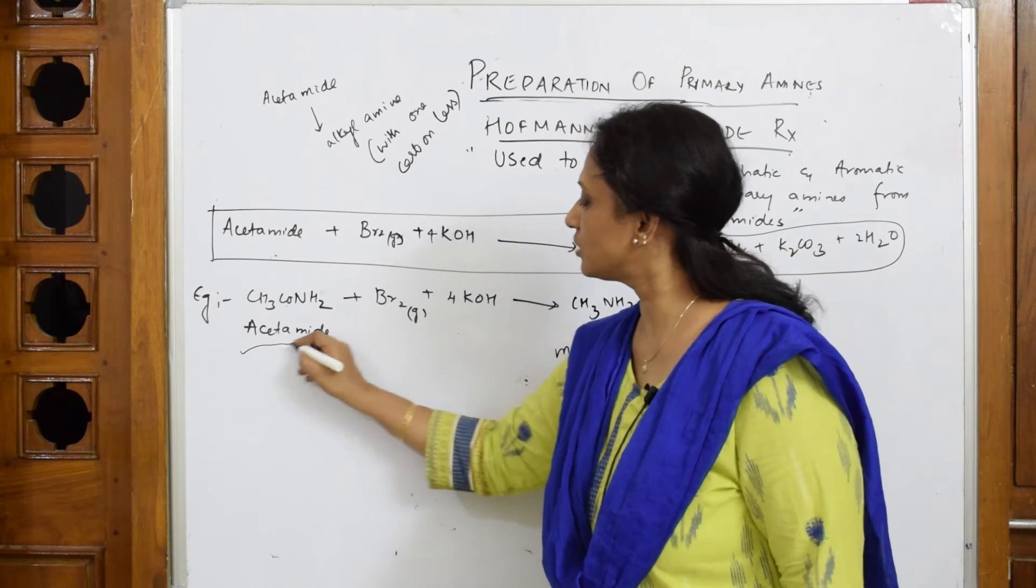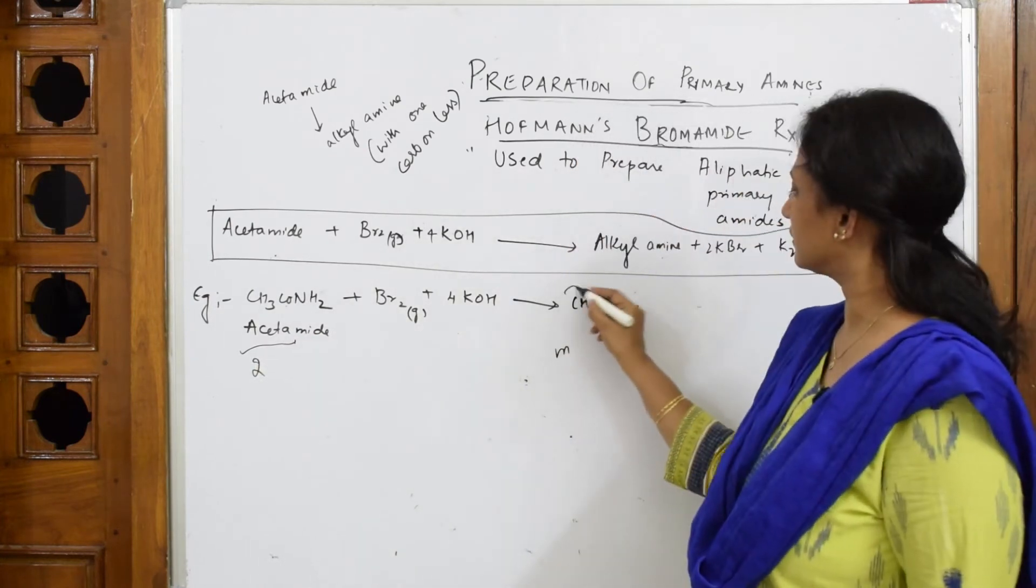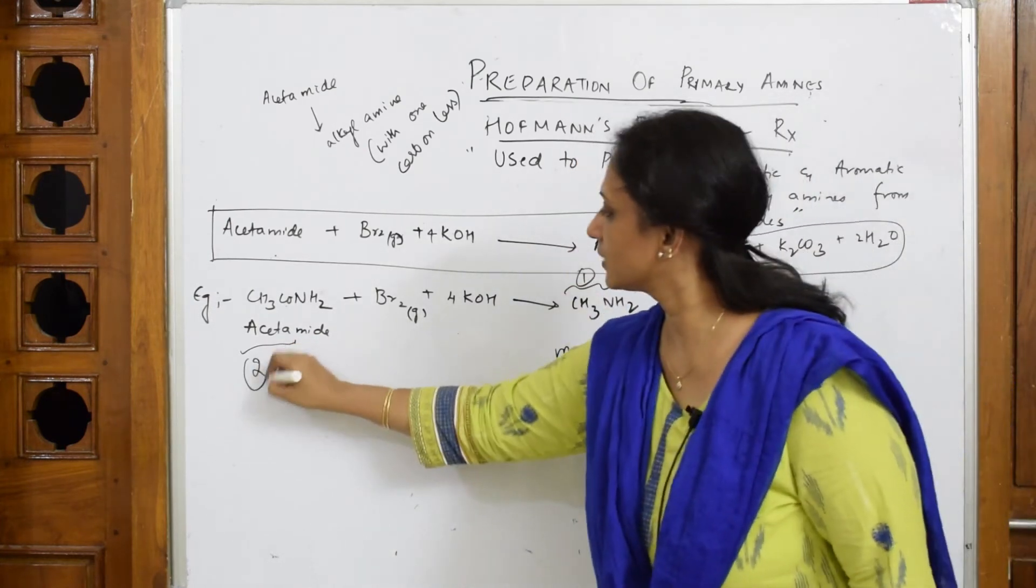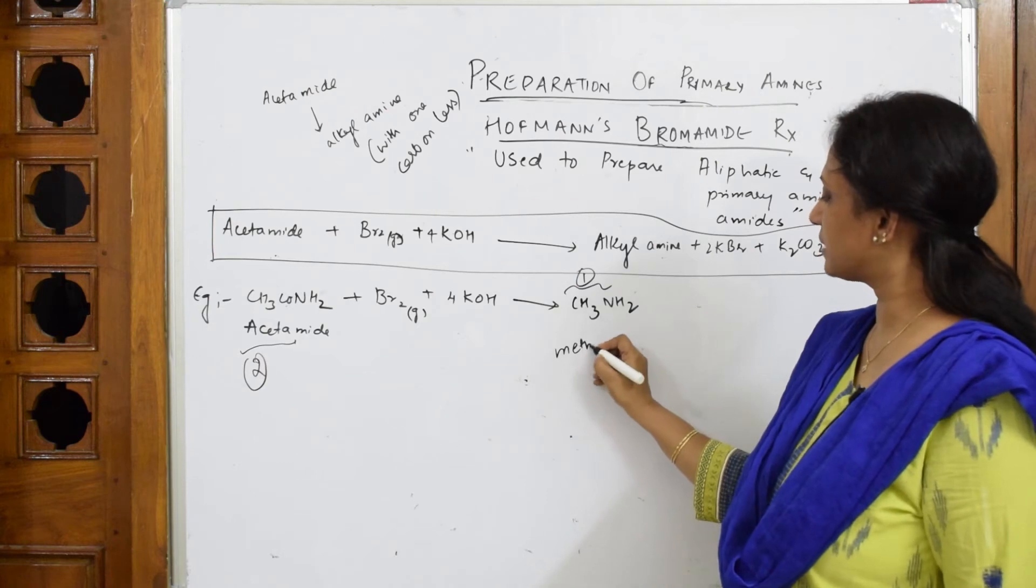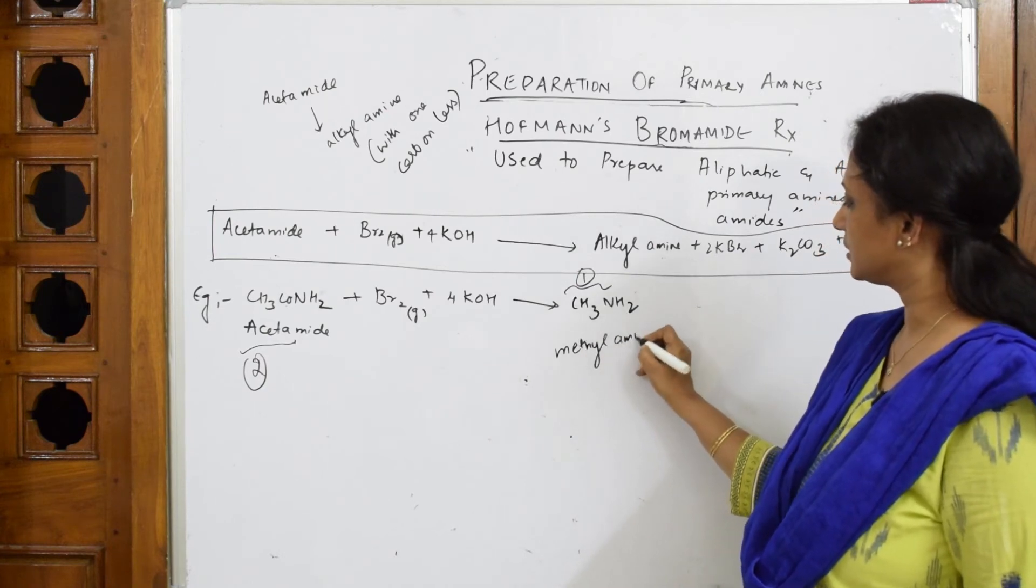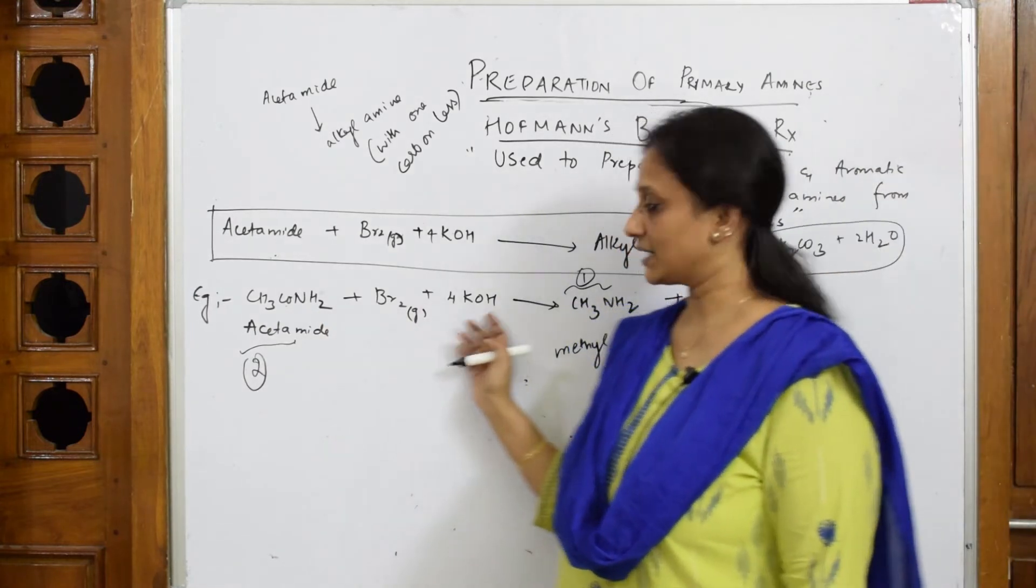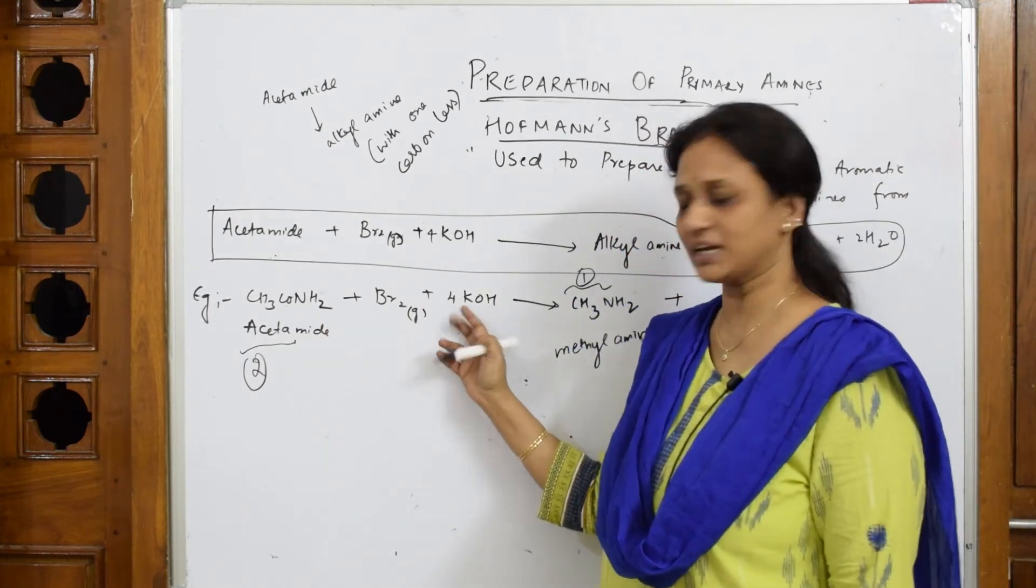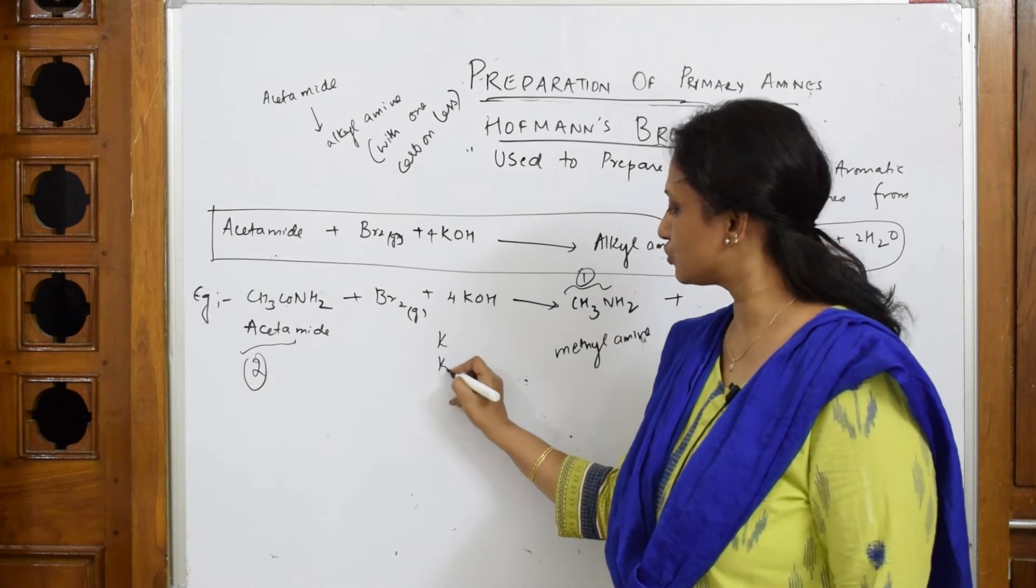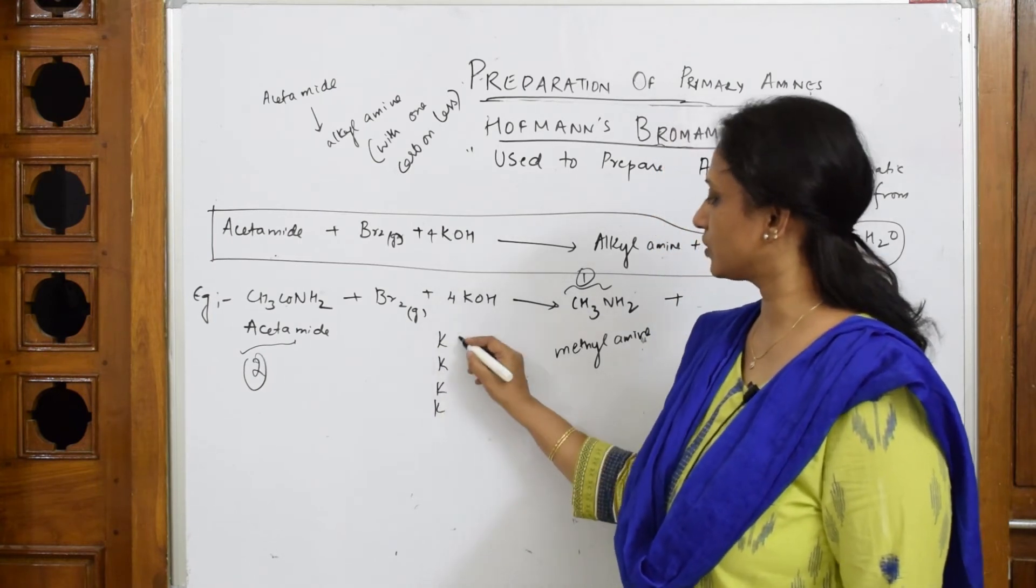This is one carbon less. This is two carbons here, this is one carbon here. What is this compound? This is primary amine, that is methyl amine. This part is over, let us come back.